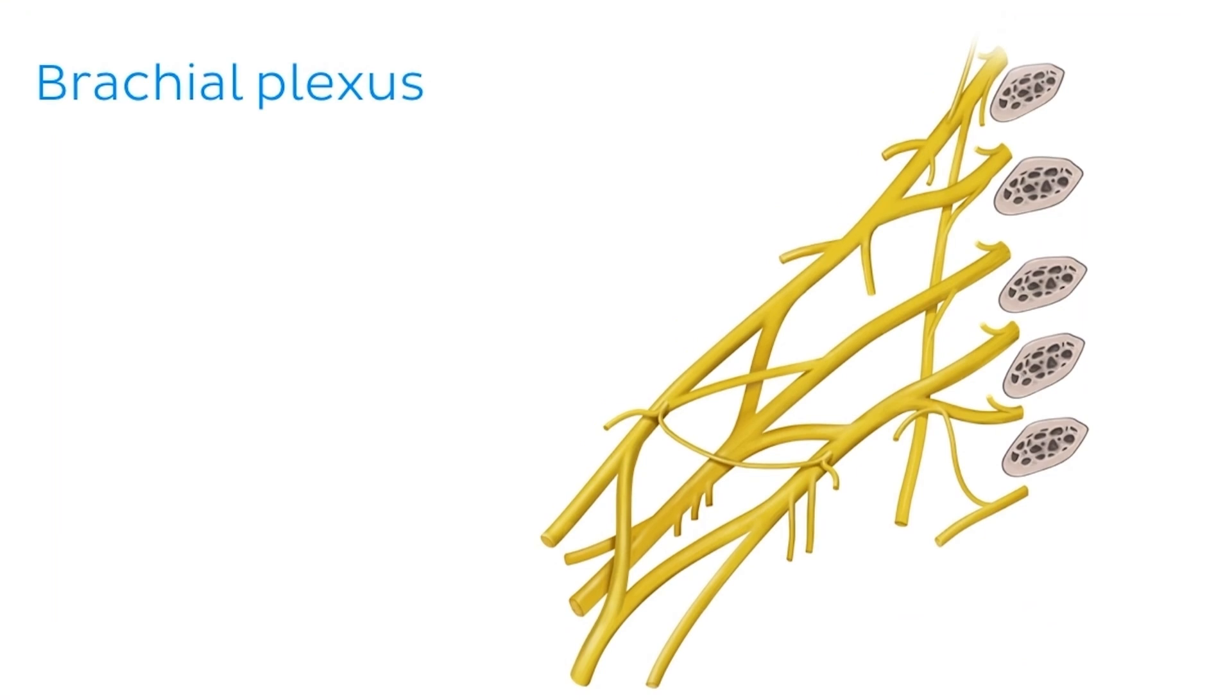Here you can see an illustration of the brachial plexus, which is formed by roots arising from the anterior rami of spinal nerves C5, C6, C7, C8, and T1.